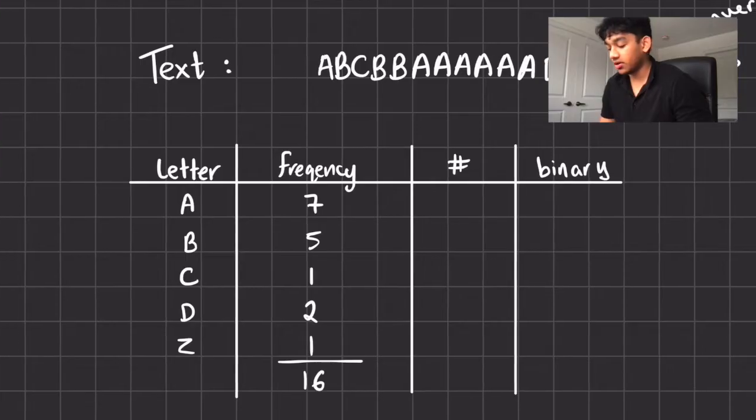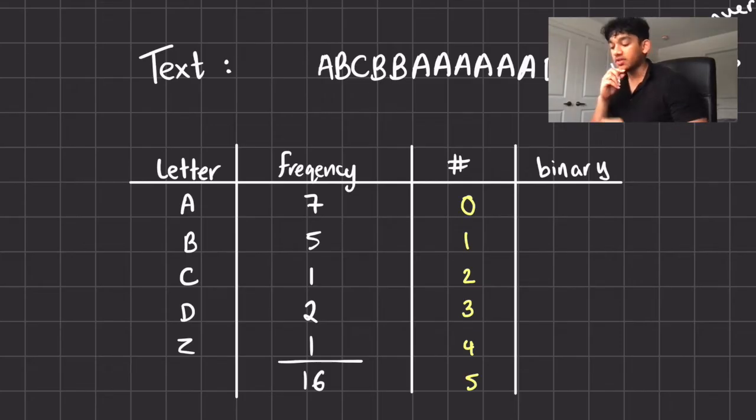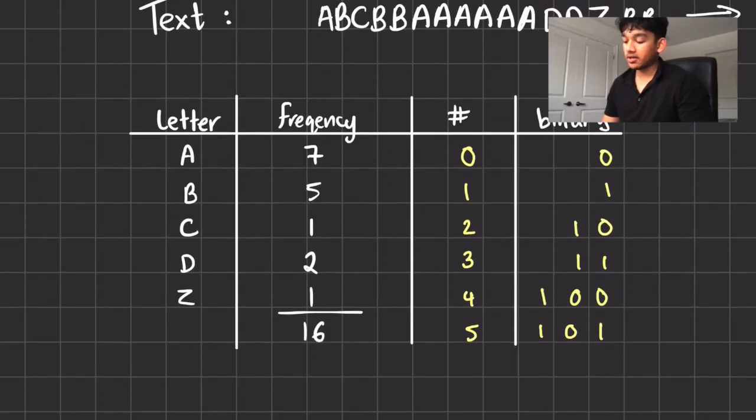So what we start off by doing is we number each item starting from zero, just for simplicity. I'll explain why later. And now we're gonna convert that to binary. So if you don't want to convert decimal to binary, that's a topic for another video. If you want a video on that, just let me know. Okay, so we have our text and we have our code. So A is zero, B is one, C is one zero, and so on.